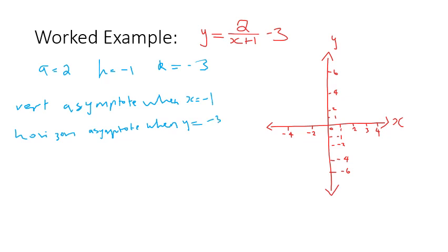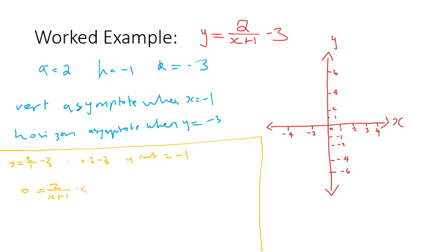Now we solve for our x and y intercepts. For the y-intercept, x equals zero: y = 2/(0 + 1) − 3 = 2 − 3, so y equals negative one. For the x-intercept, y equals zero: 0 = 2/(x + 1) − 3. Adding three to both sides gives 3 = 2/(x + 1). Multiplying both sides by (x + 1) gives 3x + 3 = 2, then 3x = −1, so x = −1/3.